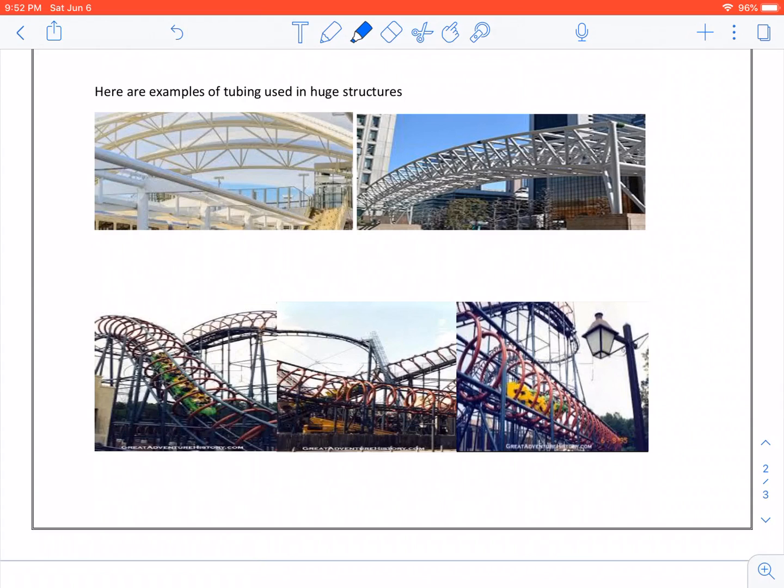Here are examples of tubing used in huge structures. Look at the building. All this is tubing to strengthen the structure. What about the roller coasters? They all use tubing.